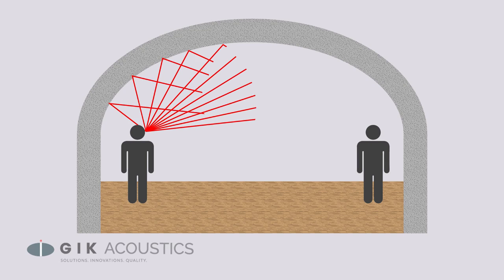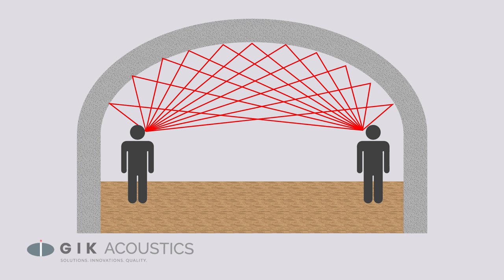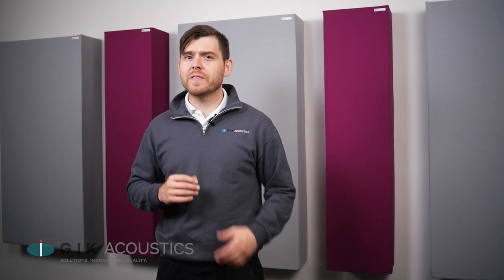Vaulted ceilings can tend to focus early reflections into certain hotspots, so finding your ideal speaker and listening position might be more difficult. Treating your first reflections might also require more coverage as well. With any room, the ratio of the ceiling to the other boundaries of the room will do more to determine the acoustics than the ceiling alone.